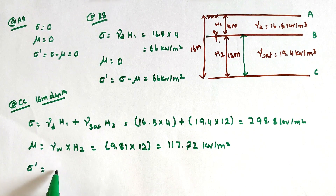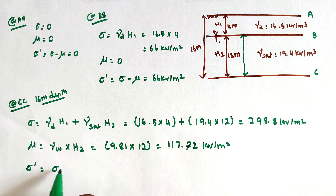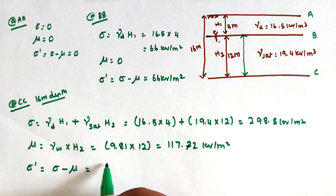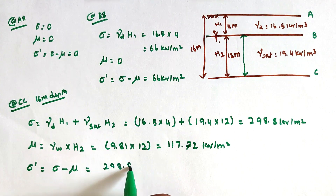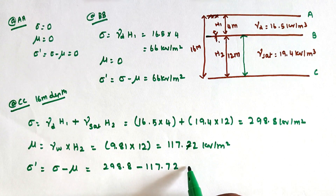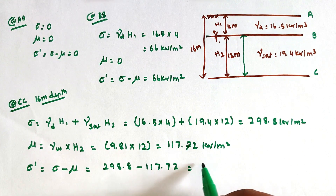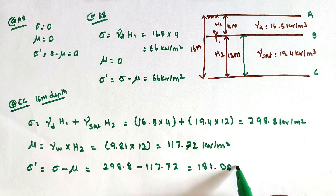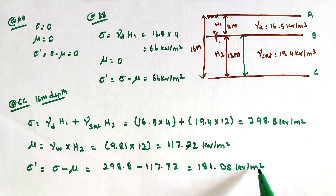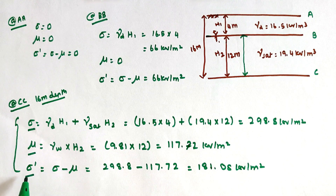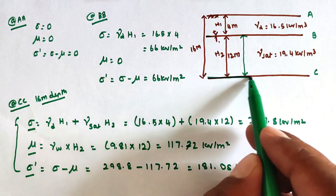The effective stress at point C: σ' = σ − u = 298.8 − 117.72 = 181.08 kN/m². These are the total stress, pore water pressure, and effective stress at 16 meters below the ground surface.